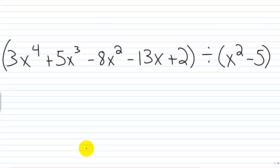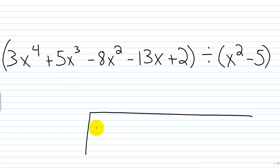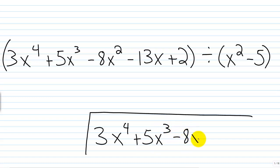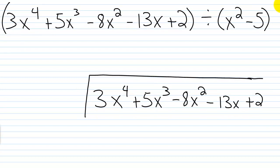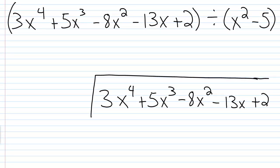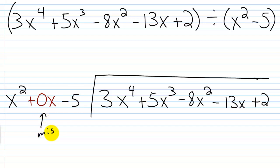When we set up our division, we write 3x to the fourth power plus 5x cubed minus 8x squared minus 13x plus 2 as usual. But for the divisor x squared minus 5, since we're missing the x term, we're going to write x squared plus 0x minus 5. That 0x is acting as a placeholder for the missing x term. If you don't put that in, when you go through the division you're going to realize you messed something up.